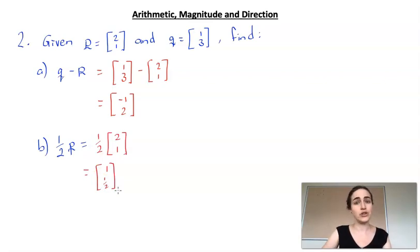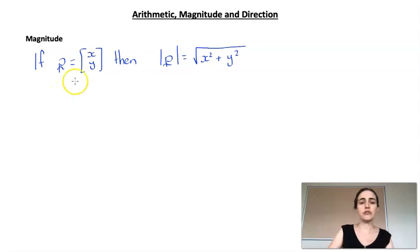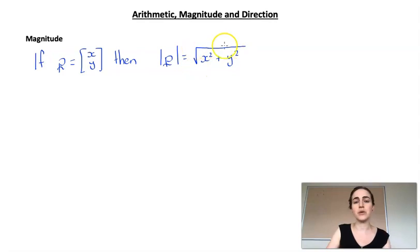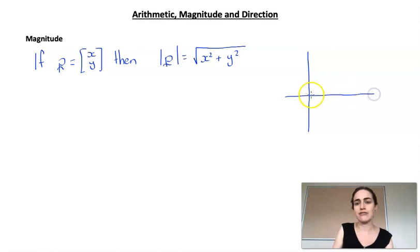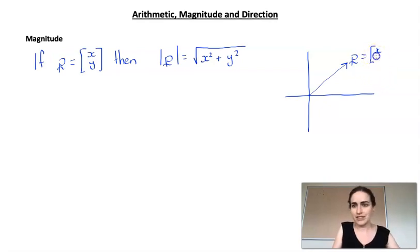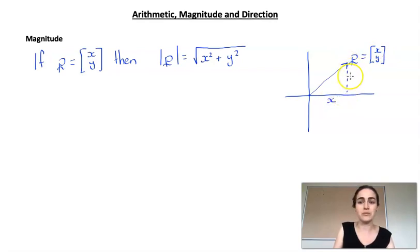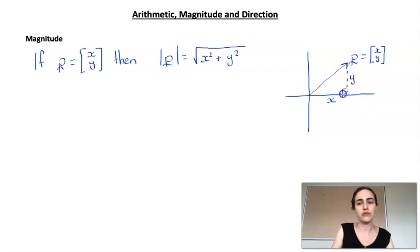Now let's look at magnitude. If we know the components and can write our vector in component or column notation, we can find its magnitude using Pythagoras' theorem: the square root of x squared plus y squared. Thinking back to when we draw a vector with its tail at the origin — x and y represent how far across and how far up it's moved — so the length of the vector is the hypotenuse of that right-angled triangle.